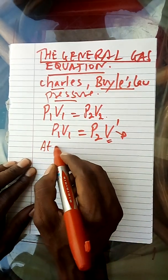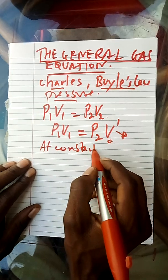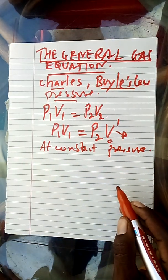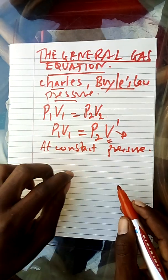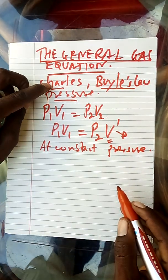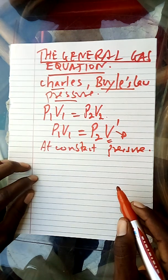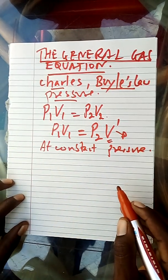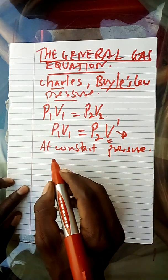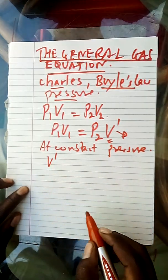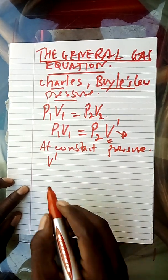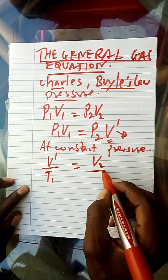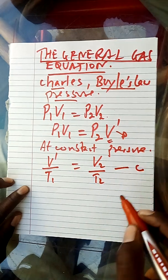But what if the pressure is kept constant? At constant pressure, you are talking about Charles' law, because Charles' law is all about volume and temperature at constant pressure. So this special volume will be the initial volume, and then initial volume over T1 is equal to the final volume over T2. This is according to Charles' law.